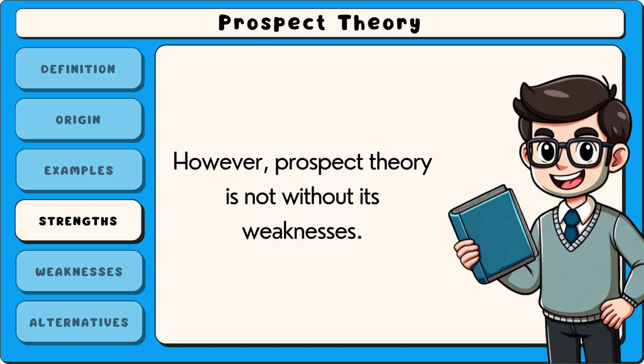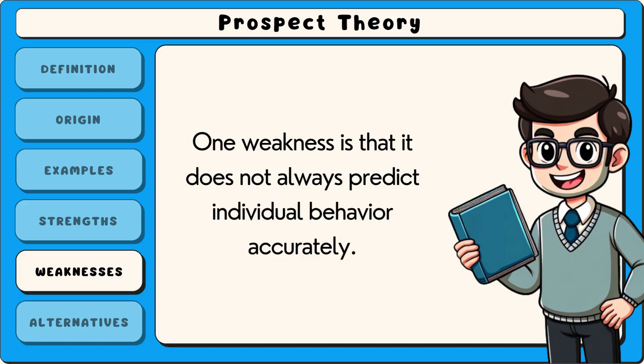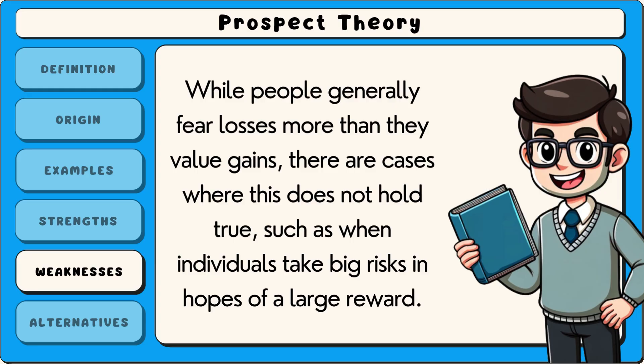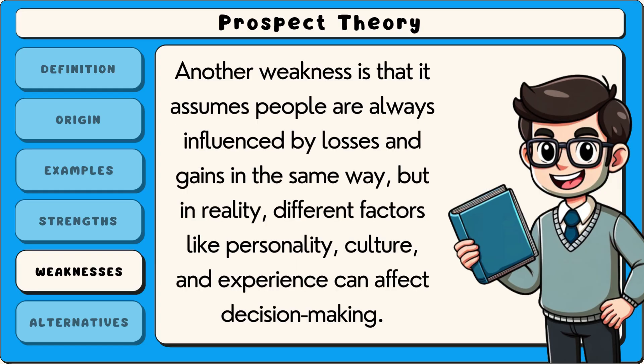However, prospect theory is not without its weaknesses. One weakness is that it does not always predict individual behaviour accurately — while people generally fear losses more than they value gains, there are cases where this does not hold true, such as when individuals take big risks in hopes of a large reward. Another weakness is that it assumes people are always influenced by losses and gains in the same way, but in reality, different factors like personality, culture and experience can affect decision-making.